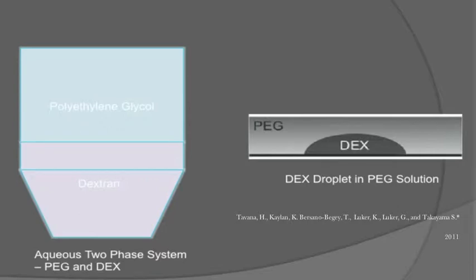In this experiment, each of the wells is spotted with DEX and then filled with PEG, as shown in the image on the right.